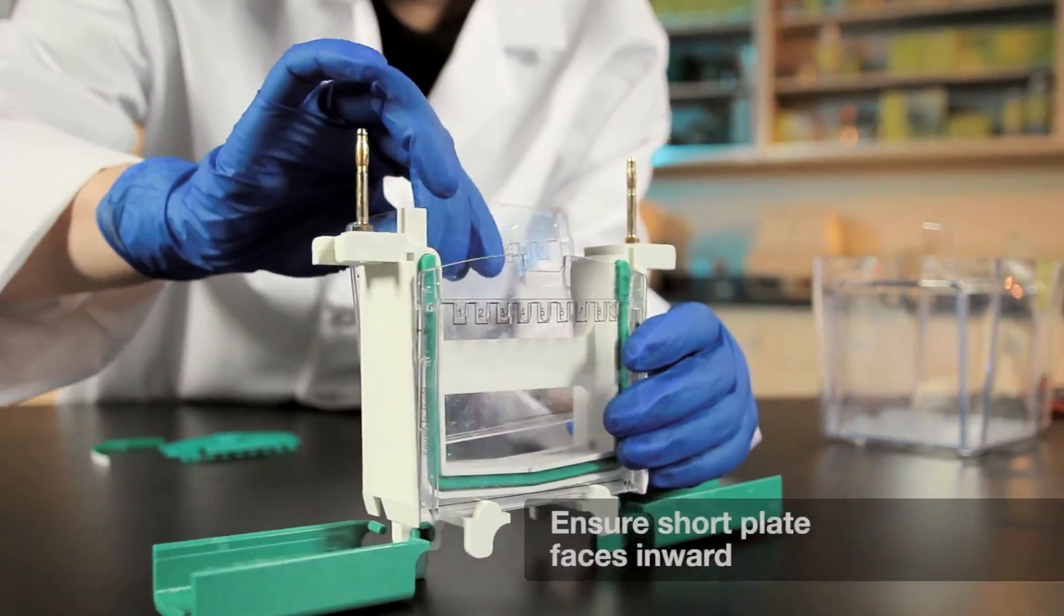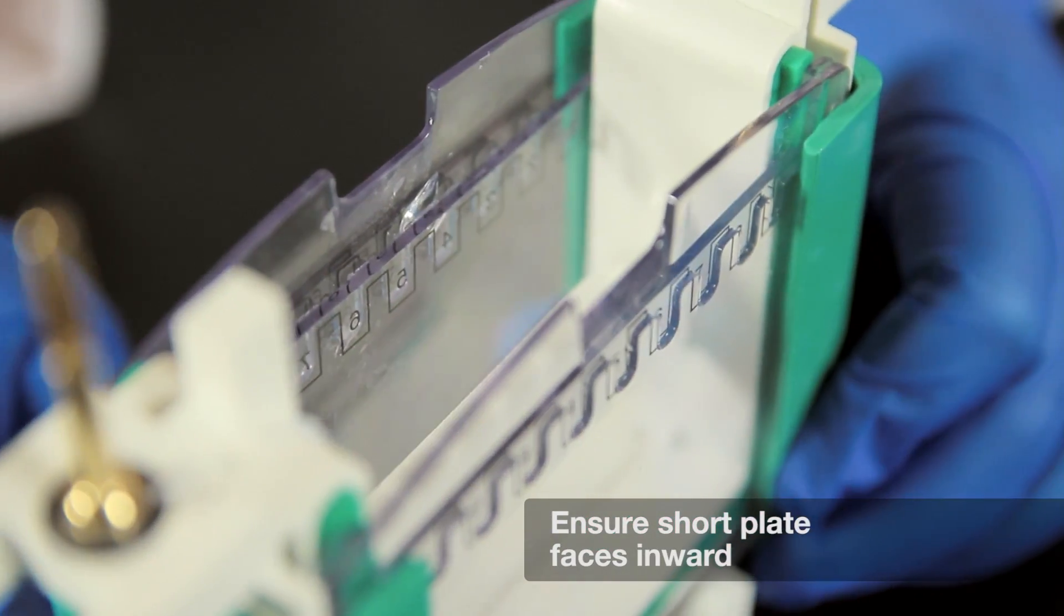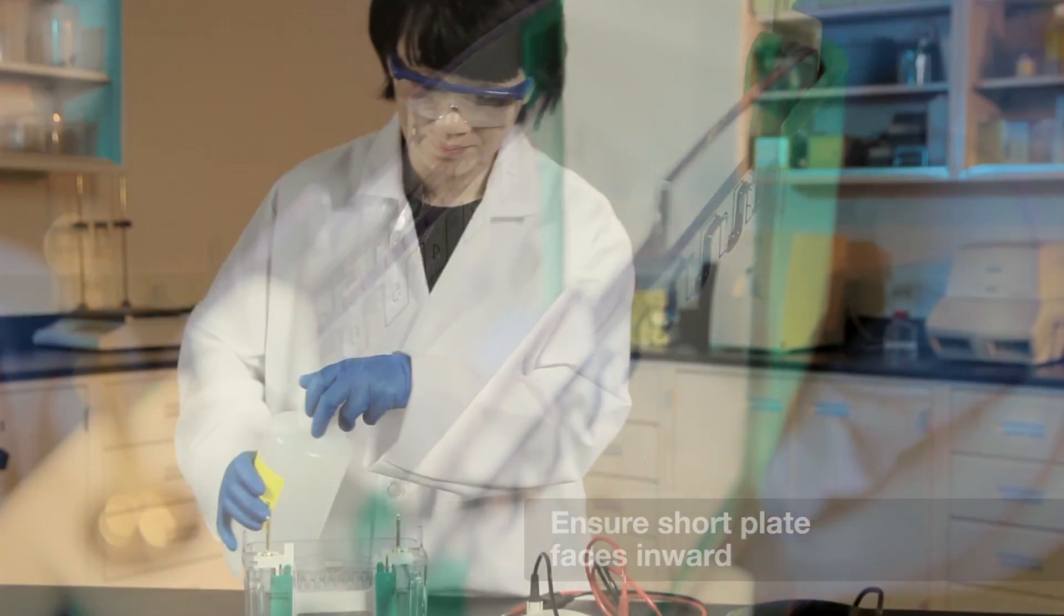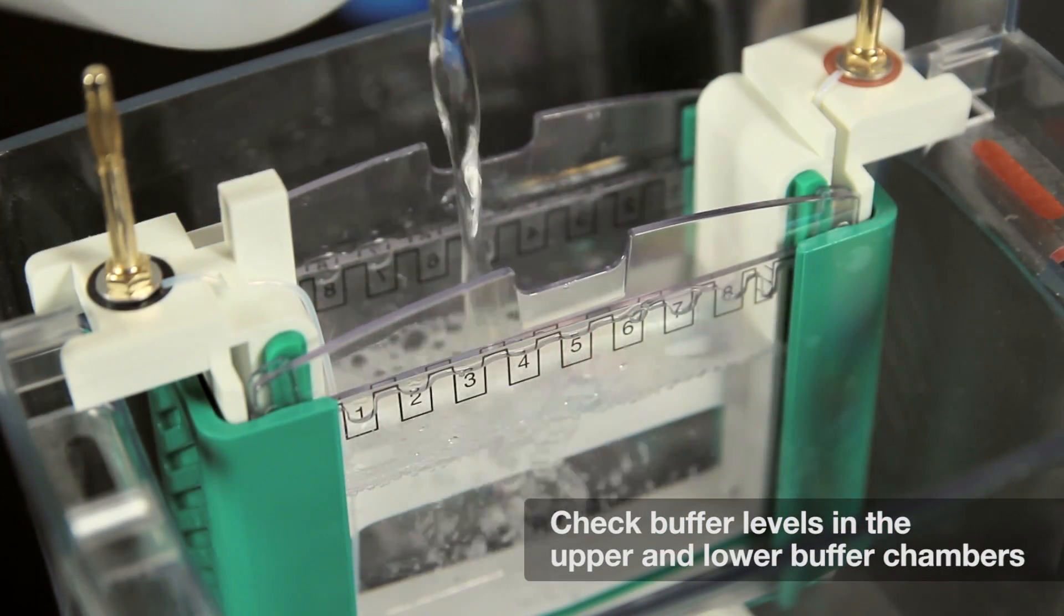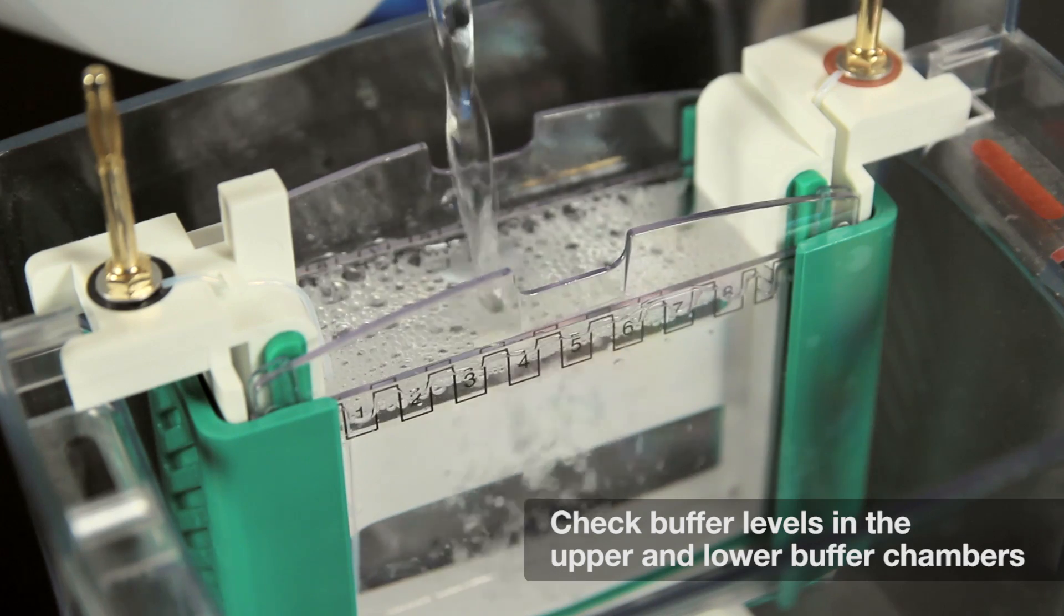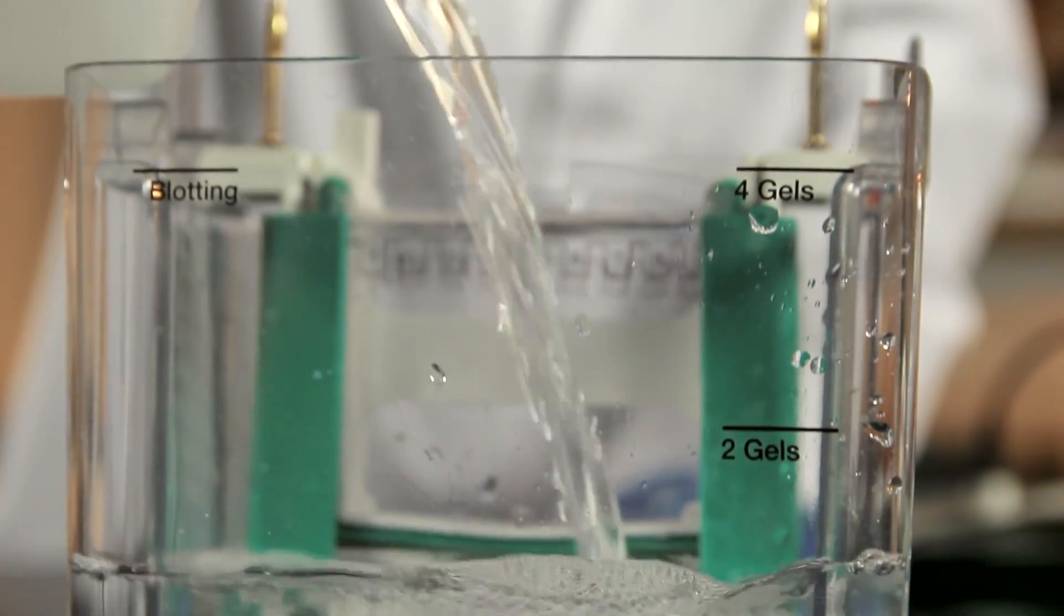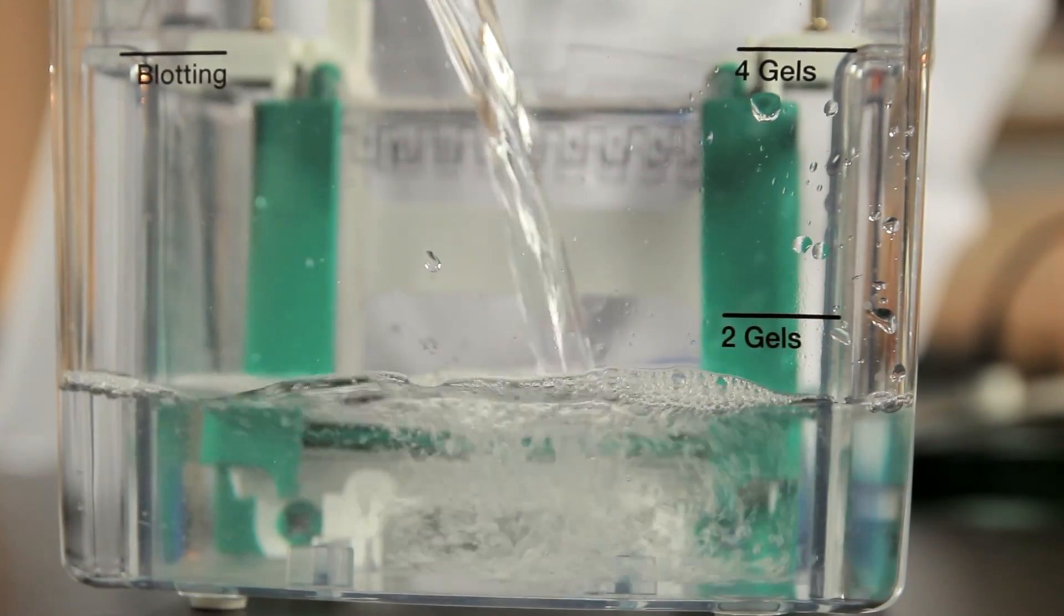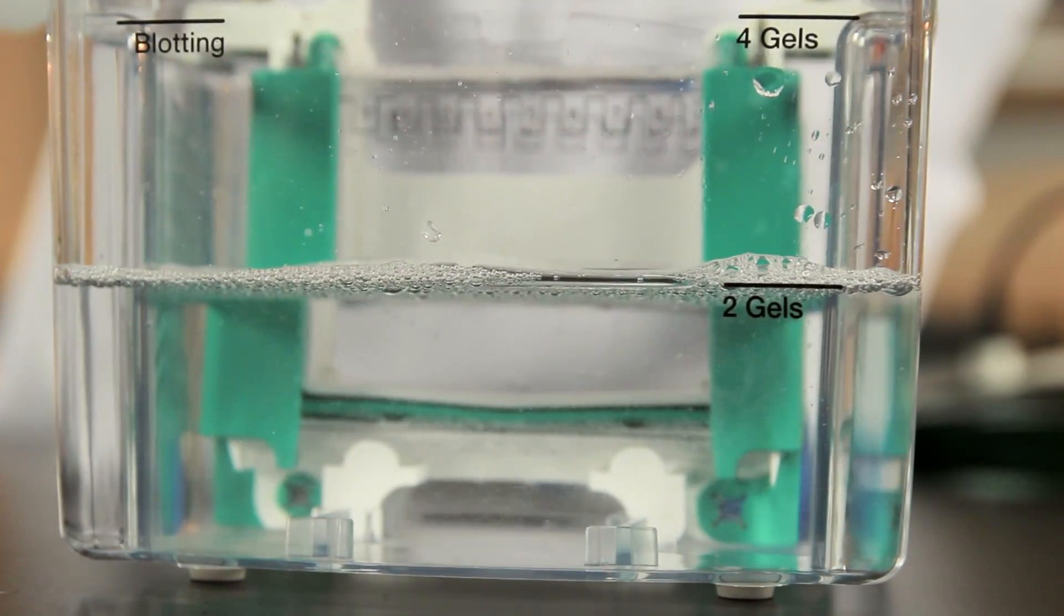Next, it is very important that the short plates face inward towards the upper buffer chamber in order to complete the circuit. Another common problem is an insufficient amount of buffer. We recommend the upper or inner buffer be filled all the way to the top, and the lower buffer be filled to 2 to 3 centimeters above the bottom of the short or inner glass plate gel. If the buffer level is below the plate gel, the circuit will not be complete.